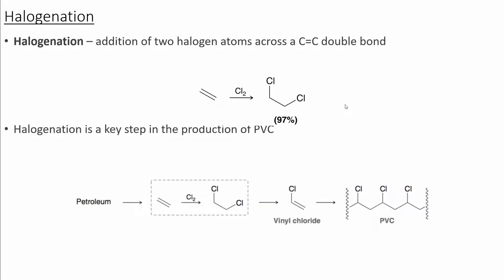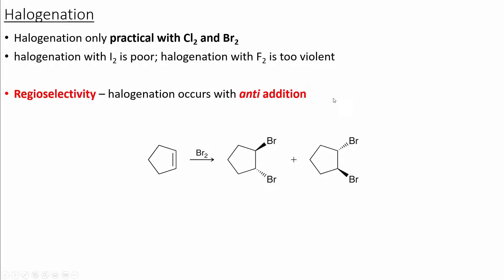The next addition reaction that we're looking at is halogenation. In halogenation, we're going to add two halogen atoms across the carbon-carbon double bond. This reaction is the key step in the production of PVC from vinyl chloride. There are two types of halogens that we can use: chlorine and bromine.